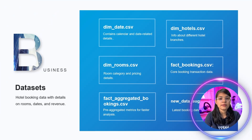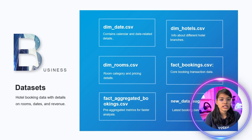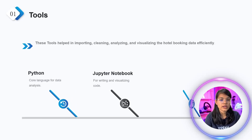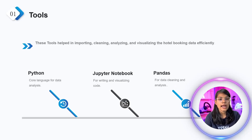These are the datasets I used in my project: dim date, dim rooms, fact aggregated booking data, dim hotels, fact booking, and new data. These are the tools I used for cleaning, analyzing, and visualizing the data — Python as the core language for data analysis, Jupyter Notebook for writing and visualizing, and pandas for data cleaning and analysis.